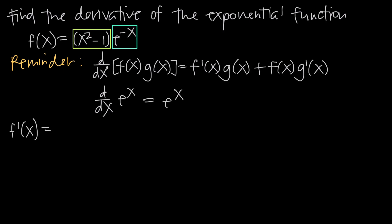I've got product rule written out here. It says that the derivative of f of x times g of x — two functions multiplied together — uses this formula: the derivative of f of x times g of x, plus f of x times the derivative of g of x. So we're going to equate x squared minus 1 to f of x, and we're going to say that e to the negative x is g of x in our formula, so we can easily apply the product rule formula.